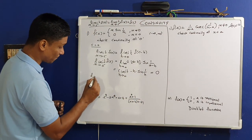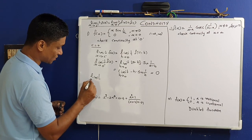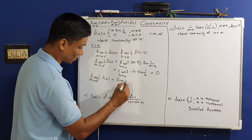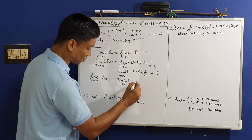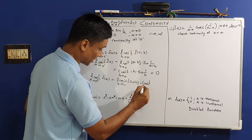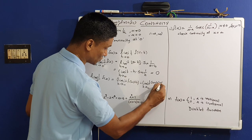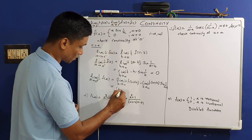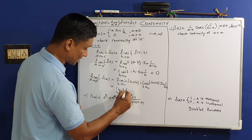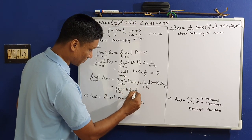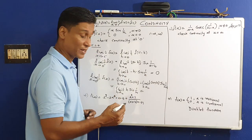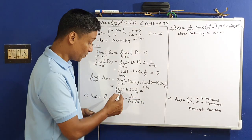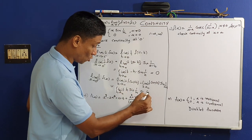Now, limit x tends to 0⁺ of f(x) equals limit h tends to 0 of f(0 plus h), which equals limit h tends to 0 of (0 plus h)·sin(1/(0 plus h)), which is equal to limit h tends to 0 of h·sin(1/h). As h tends to 0, sin(1/h) is always bounded with maximum value 1, so this product h·sin(1/h) becomes 0.